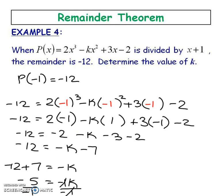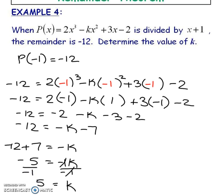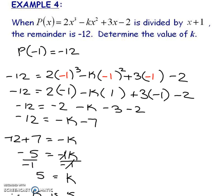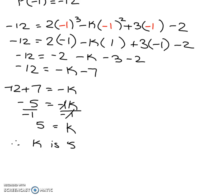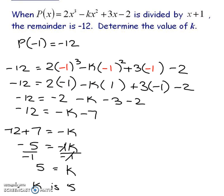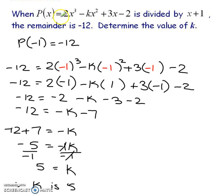This is where the questions get a little bit more complicated so this is almost like an application type of question. Example number 4. When P(x) is equal to all this notice that there's a k right there. It's going to be divided by this divisor and they're already telling you the remainder is negative 12 so they have the answer for you. So determine the value of k.